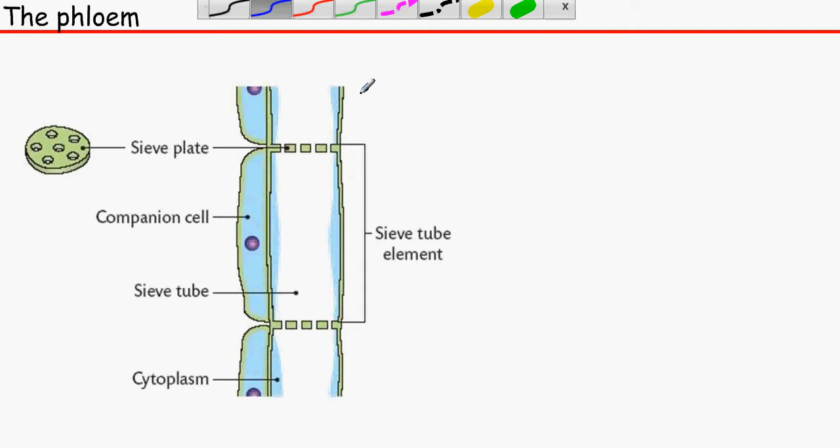But it's lined up end to end to form a tube like this, in which it transports sugars, especially sucrose.